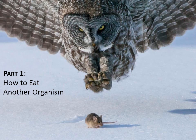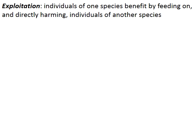Over half of all Earth's species sustain themselves by feeding on other living organisms. Some acts of consumption result in the death of the food source, such as this mouse that is about to be captured by a great grey owl. Others merely graze by eating the tissue and fluids of their food source. The conceptual thread linking these interactions is that they all result in the exploitation of one individual — a relationship in which individuals of one species benefit by feeding on and directly harming individuals of another species.